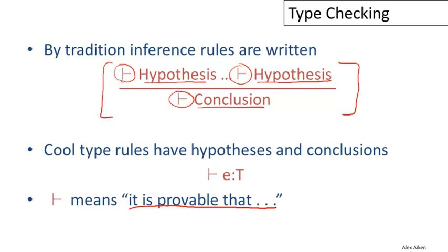The way you would read this is: if it is provable that all these hypotheses are true—the first hypothesis, all the middle hypotheses, and the last hypothesis—then it is provable that the conclusion is true.